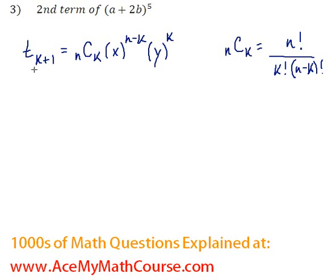Great, so if we're looking for the second term, k+1 = 2, which means k = 1, since I can subtract 1 from both sides.